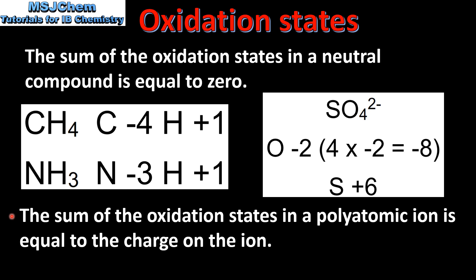The sum of the oxidation states in a polyatomic ion is equal to the charge on the ion. Here we have the sulfate ion, SO₄²⁻. The oxidation state of oxygen is negative 2, and we have 4 of them, giving an overall charge of negative 8. The overall charge on the sulfate ion is 2−, therefore the oxidation state of sulfur is plus 6.